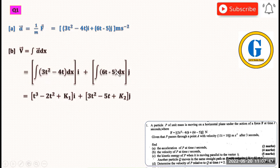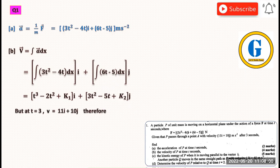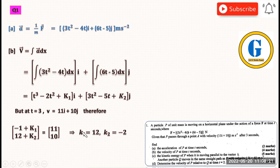For the j component, we have 6t²/2, which gives us 3t² - 5t plus a constant K₂. But we've been told that at t = 3 seconds, the velocity is 11i + 10j. We use this to find the constants. Substituting t = 3 into the equation, we get K₁ = 12 and K₂ = -2.